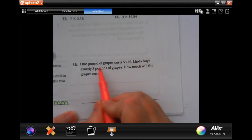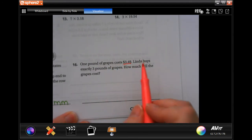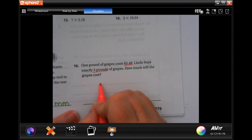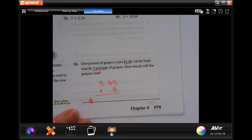One pound of grapes costs $3.49. Linda buys exactly three pounds of grapes. How much will the grapes cost? So, 3.49 times three. And whatever our answer is going to be, it's going to be in dollars. So, that dollar sign is your label on this one.